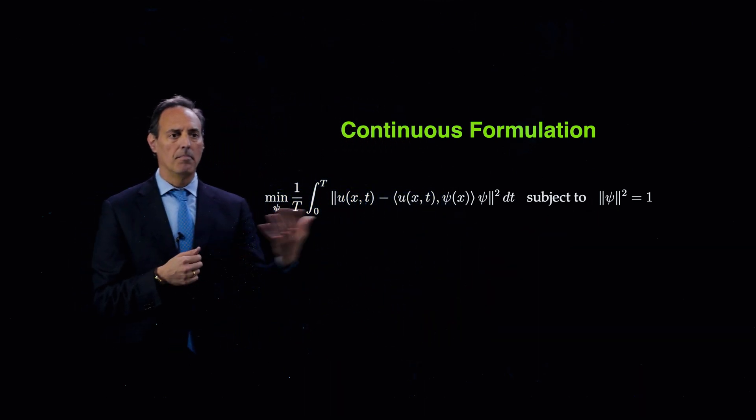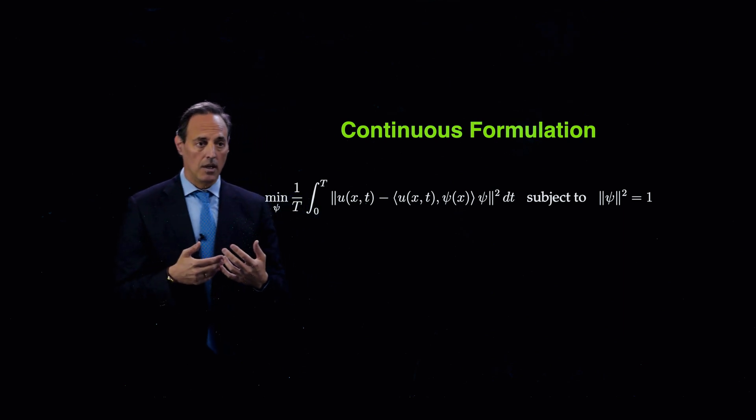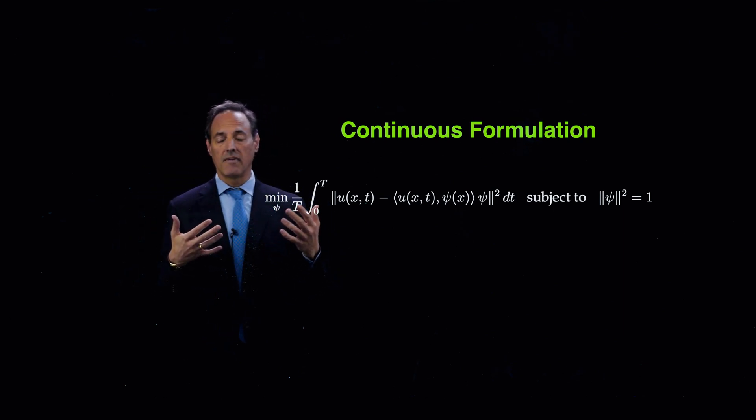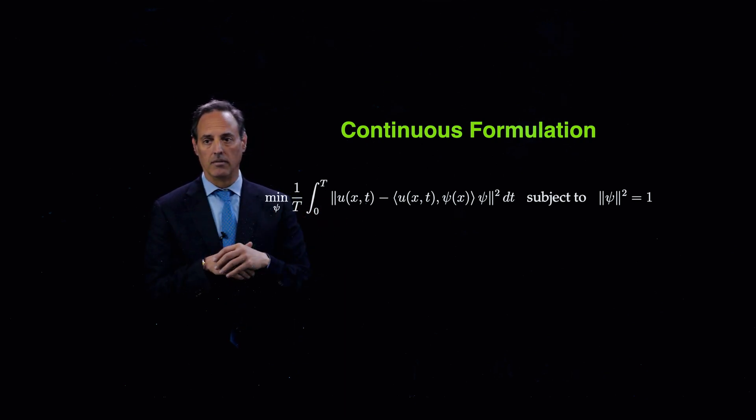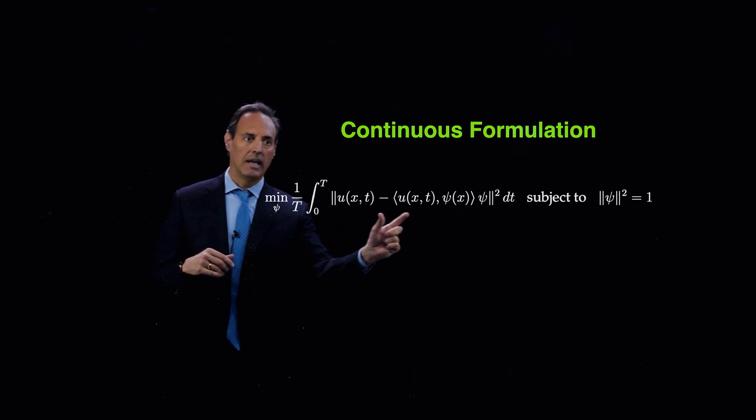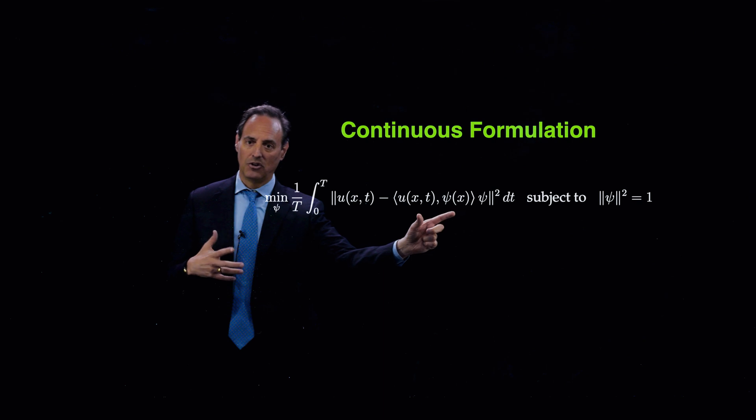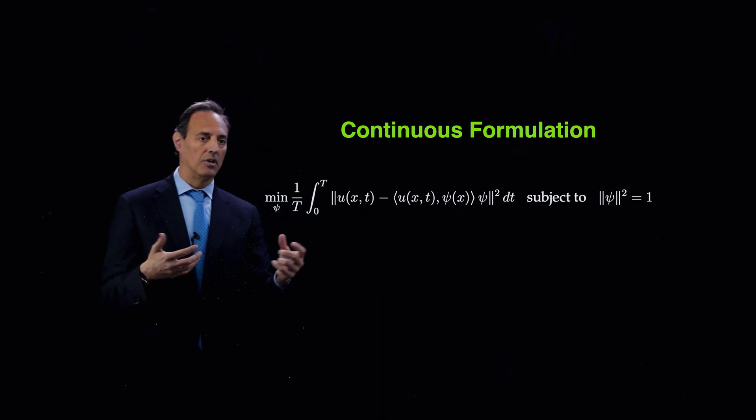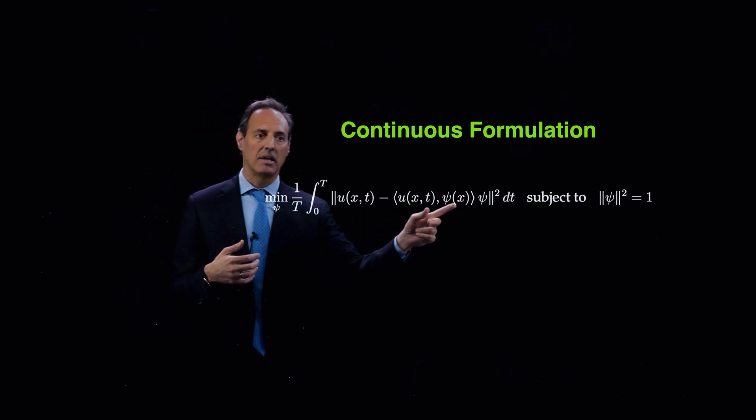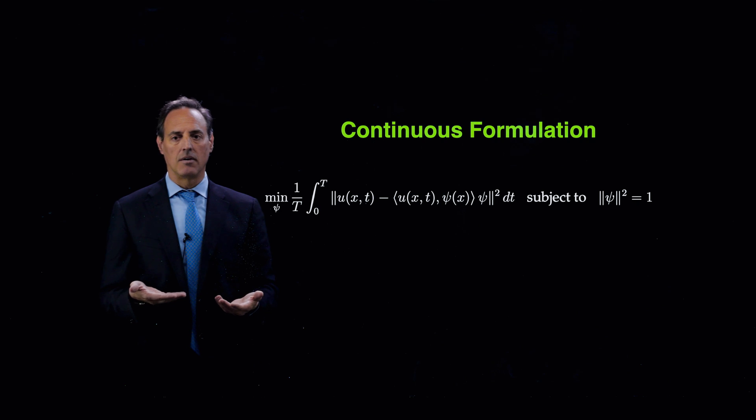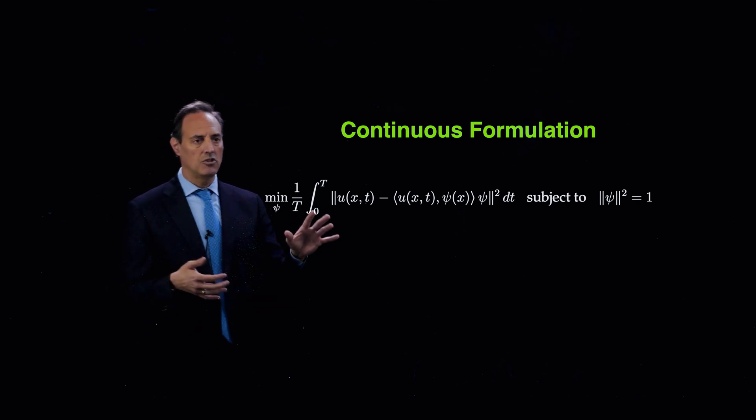So the goal is to minimize this. In other words, if I have a very good projection, then if the projection is perfect, then this would be zero. I would get no difference between my actual u and the projected u. But of course typically when we project, we're always going to get an error, but the point is find the best phi that makes this error minimal.